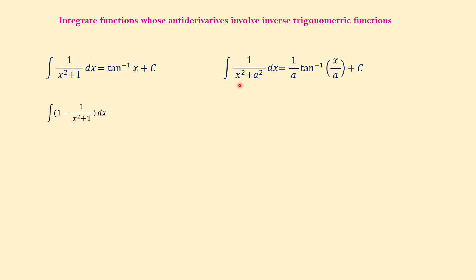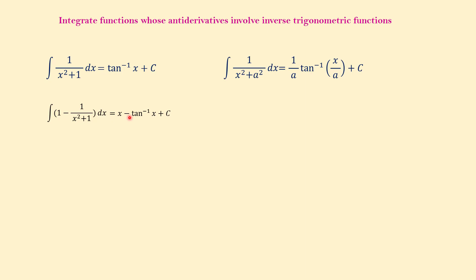Let's do an example. What is the integral of (1 − 1/(x² + 1)) dx? The integral of 1 is x, and the integral of 1 over (x² + 1) is arctan(x), so the answer is x − arctan(x) plus c.